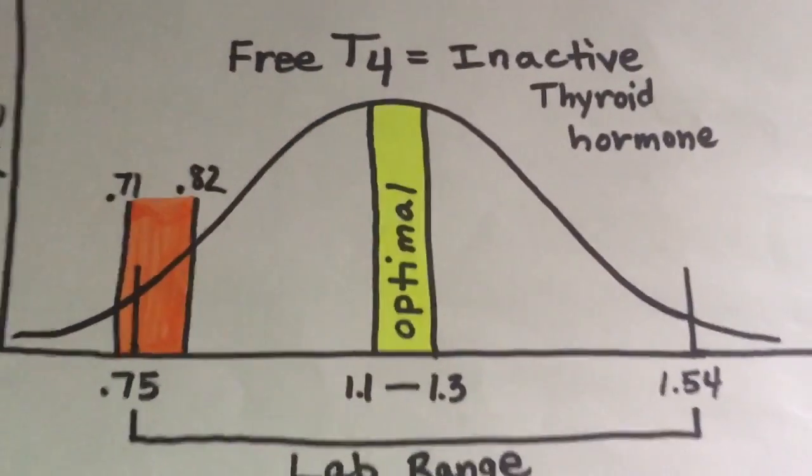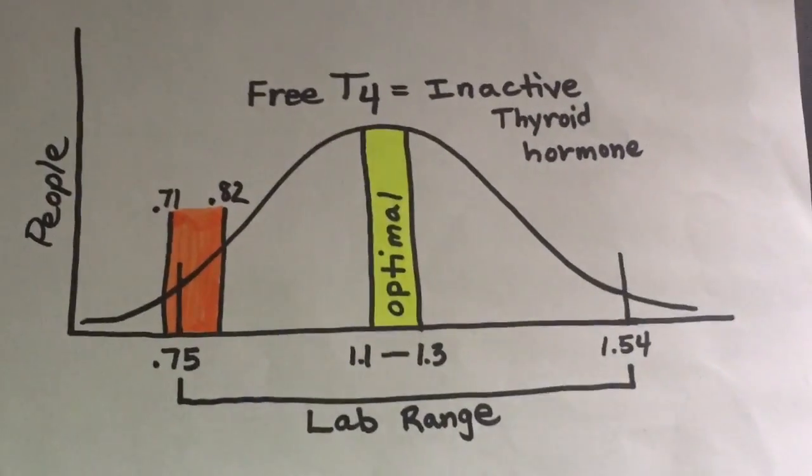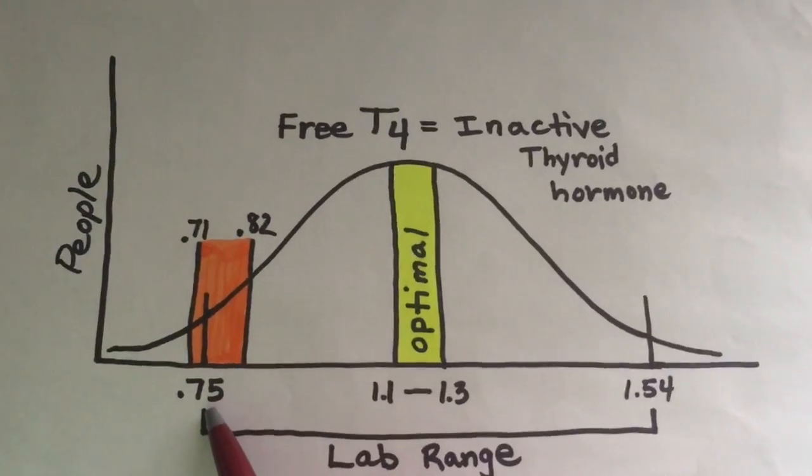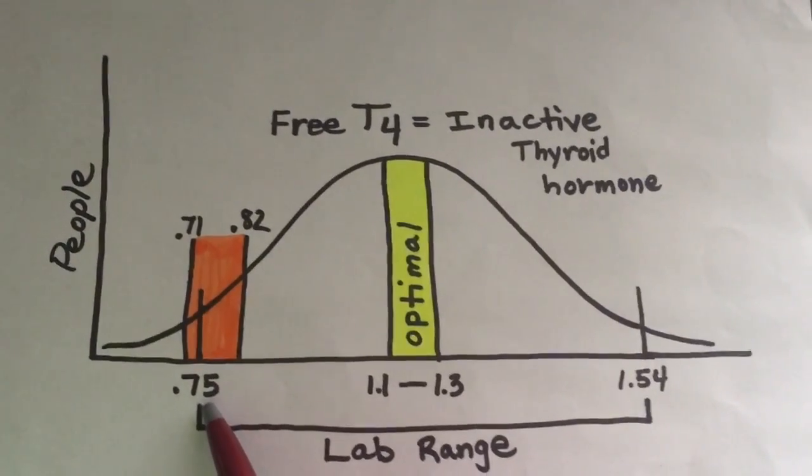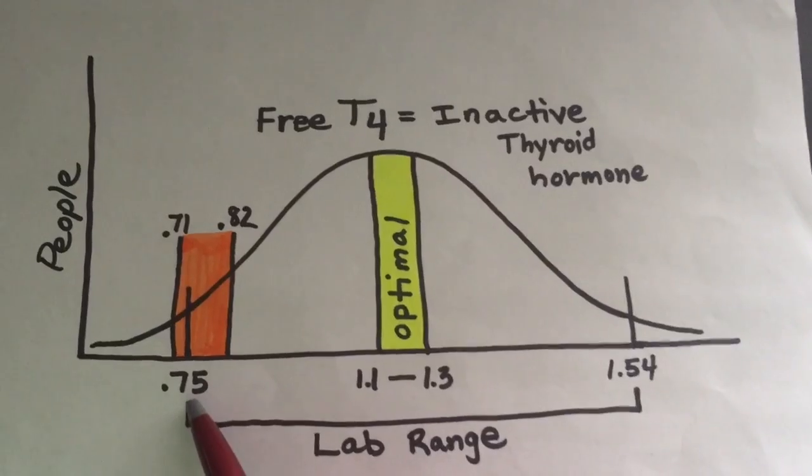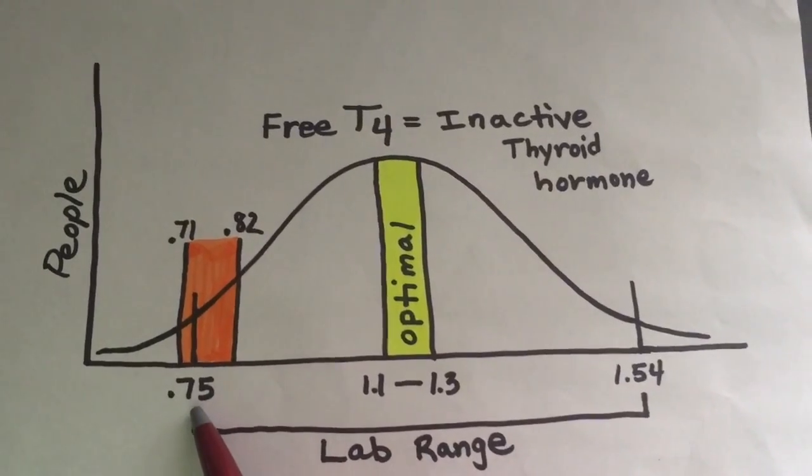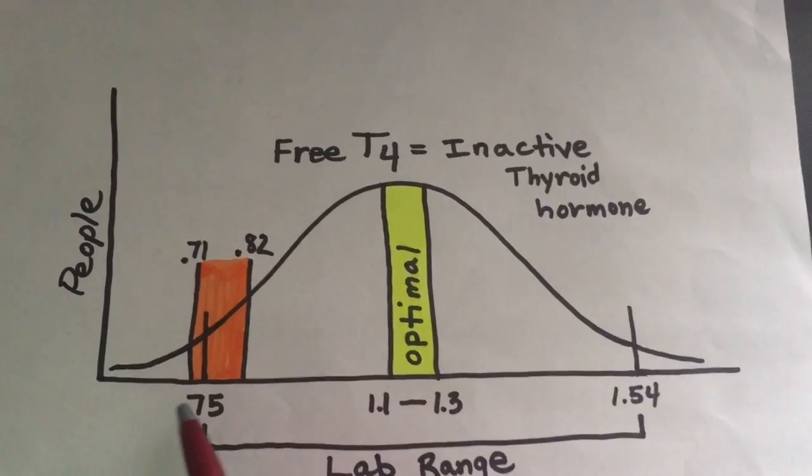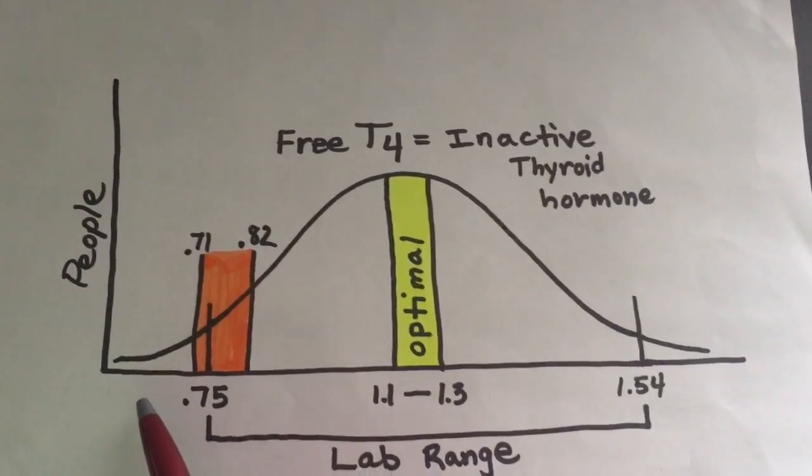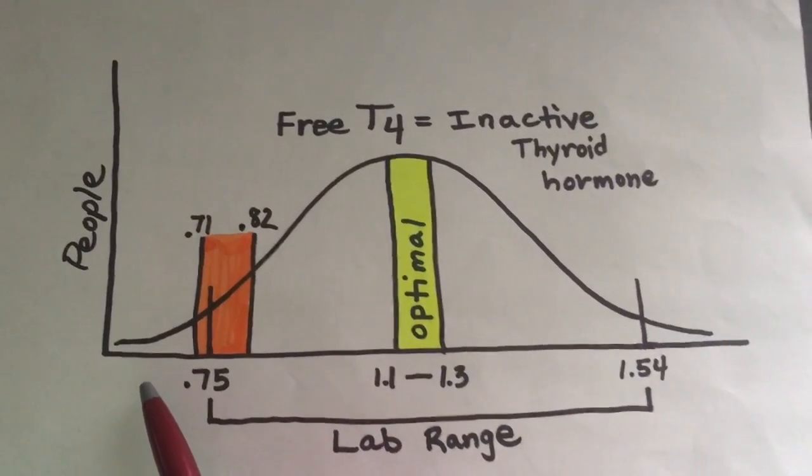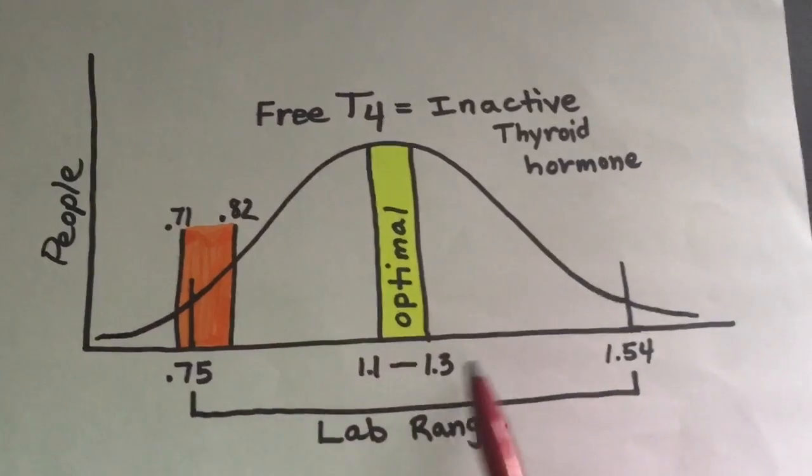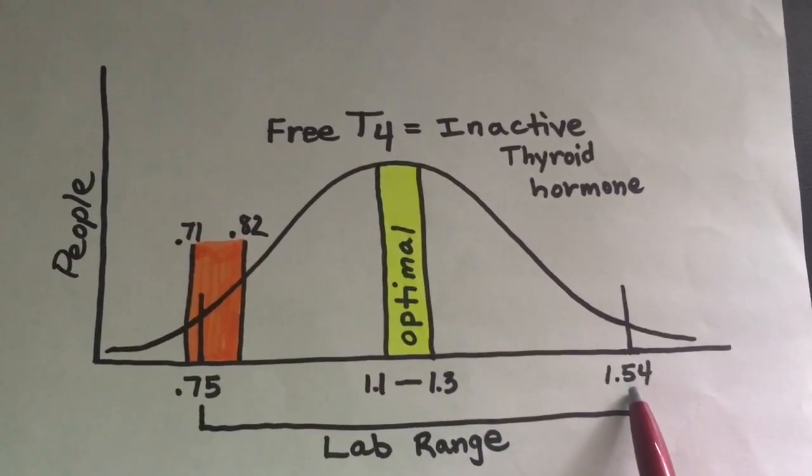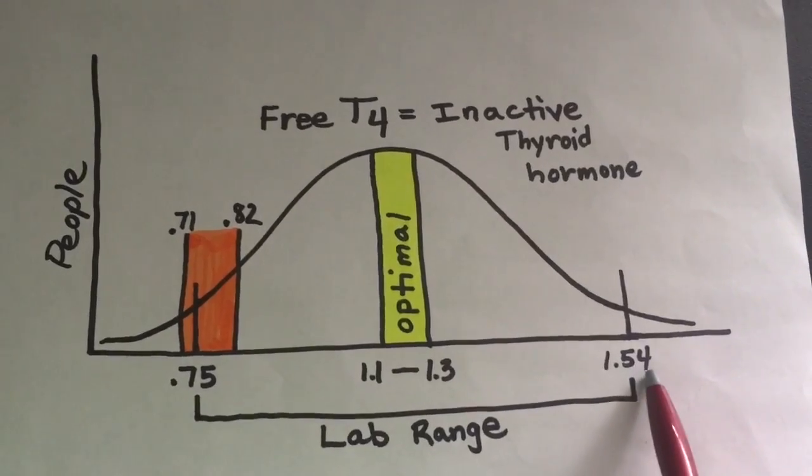I wanted to illustrate this on a graph. This is a general lab range of thyroid hormones, free T4, inactive thyroid hormone. This lab ranges from 0.75 being at the low end. Anybody outside of this range, lower than 0.75, technically has low thyroid hormone. Anybody above 1.54, any lab value above 1.54, has excess thyroid hormone.